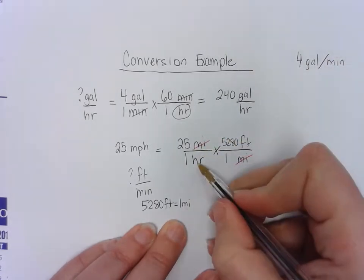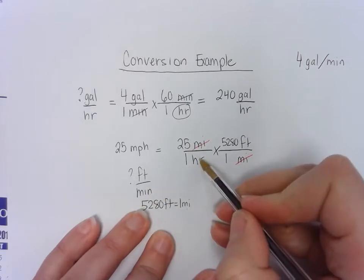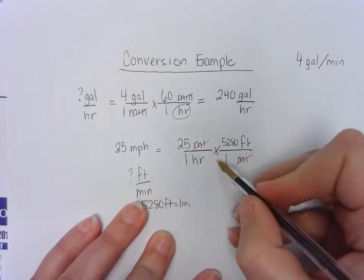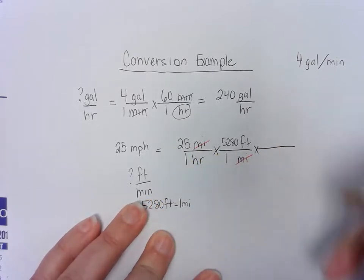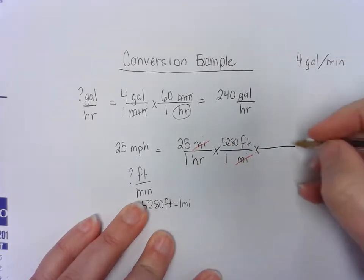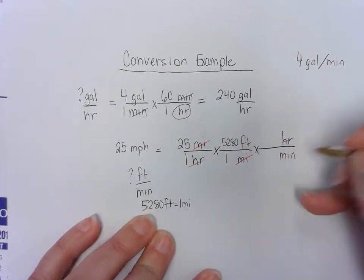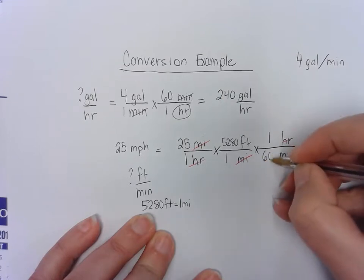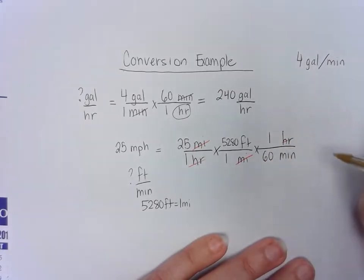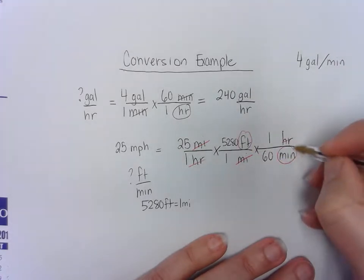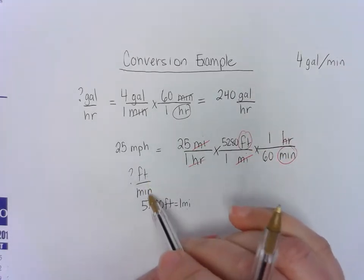I now have hours that I want to change into minutes. They're both time. So hours is on the bottom in the next fraction. I'm just going to continue on in one line. And I'm going to have my hours on the top in order for it to cancel. And I can go hours to minutes. I know that one hour is 60 minutes. Now I have feet and I have minutes, which is what I asked for in my example problem.